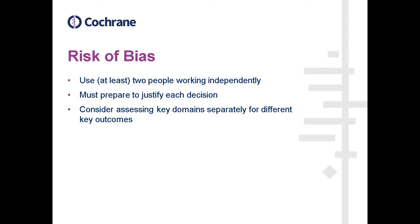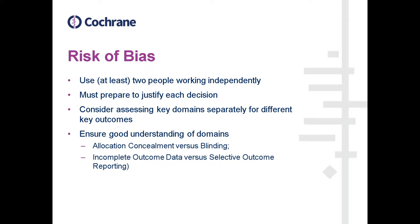So in a case like that, a domain like blinding is very important. But if you think about the outcome of death, if a person knows they have received the treatment, that is not going to make them any more or less likely to die. So for an outcome such as death, maybe the domain of blinding isn't quite as important. It could be important to assess those outcomes differently for that domain. I would really recommend ensuring you have a good understanding of the domains before you start to do the risk of bias assessment.